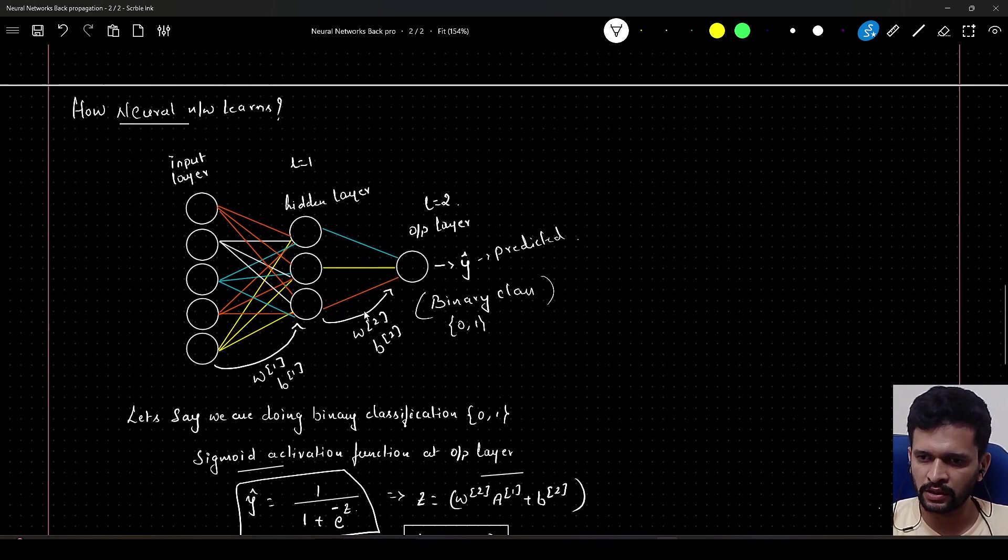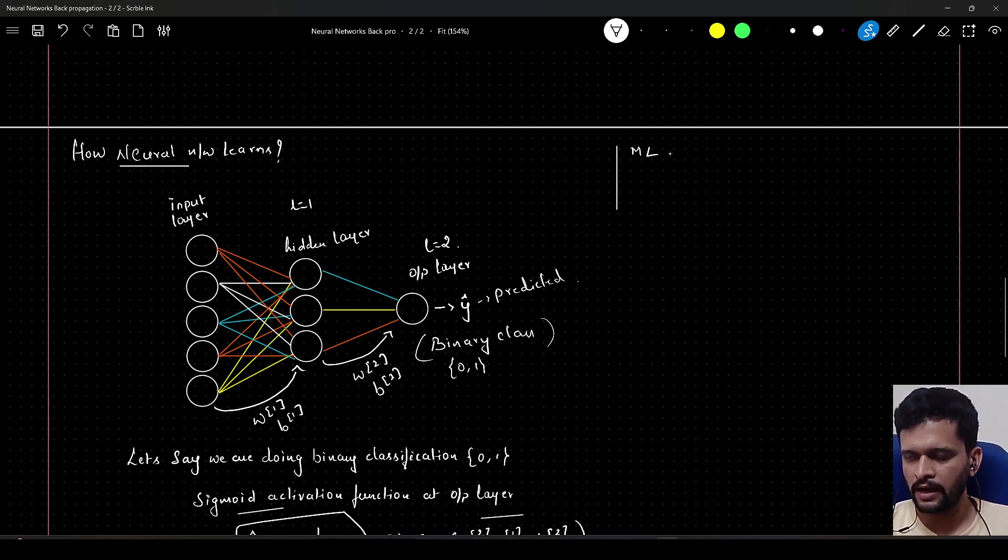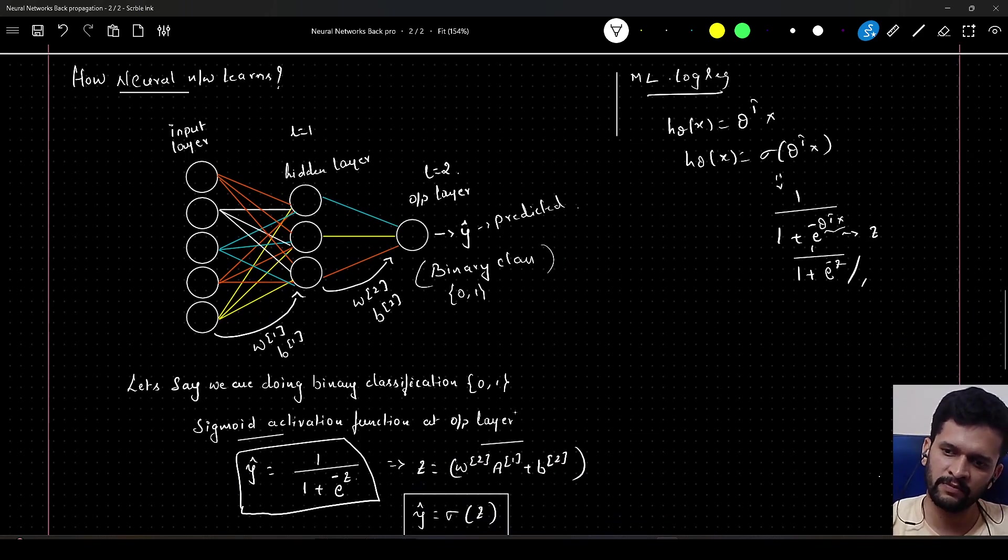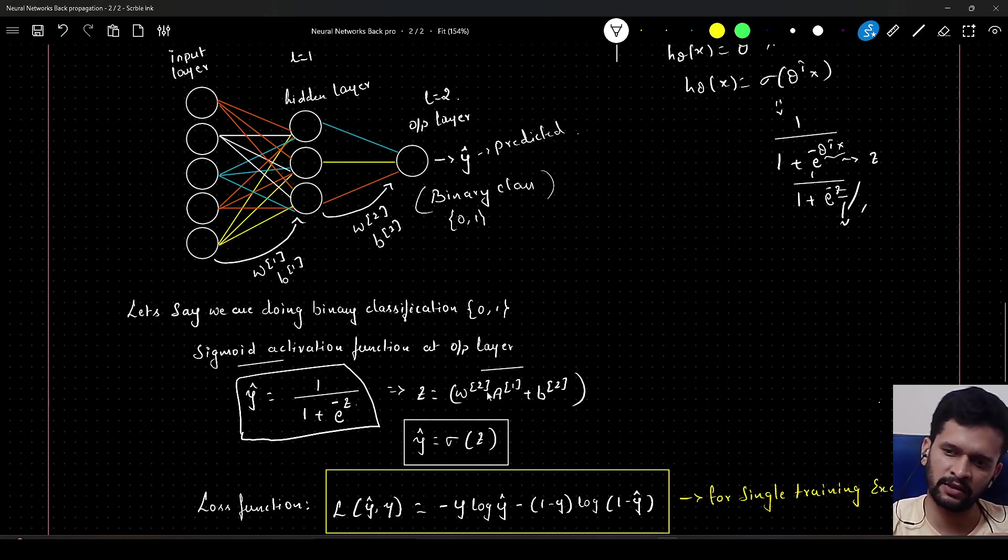If you compare it with the machine learning analogy of logistic regression, we initially had the hypothesis of linear regression as theta transpose x, and for logistic regression we changed it to sigmoid of theta transpose x, which will be 1 by 1 plus e to the power minus theta transpose x. We represented this theta transpose x as small z in that machine learning algorithm. This entire formula remains the same, just the representation of z differs. It will be w of 2 into a of 1 plus b of 2.